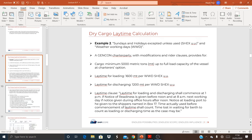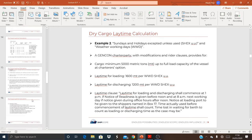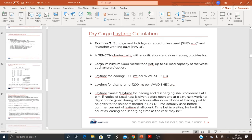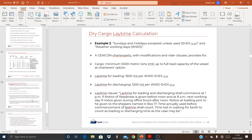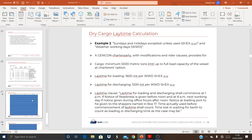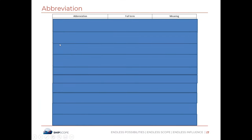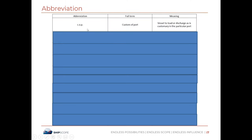There are many more questions available in the course materials. Now let's go to the abbreviations part. I have compiled a list of abbreviations normally used in laytime calculation. COP is Custom of Port — vessel to load and discharge as is customary in the particular port. CRR is current rate of loading. CRD is current rate of discharging.